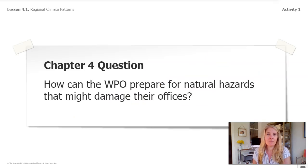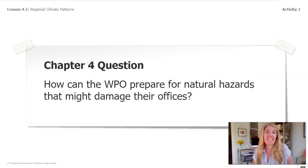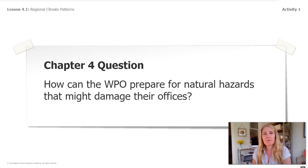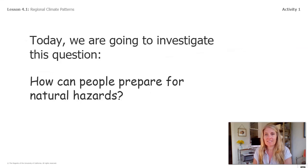Meteorologists use the term natural hazards when they talk about types of dangerous weather. Blizzards, hurricanes, and lightning are all natural hazards. As meteorologists, it's our job to answer this new question for Chapter 4: How can the WPO prepare for natural hazards that might damage their offices? Our investigation question for today is: How can people prepare for natural hazards?